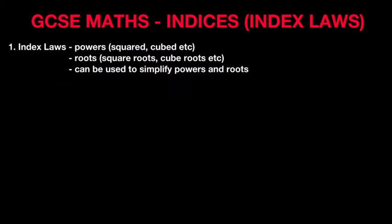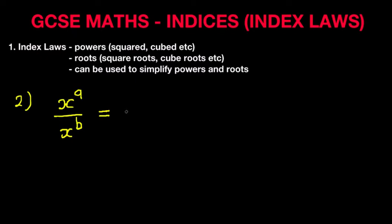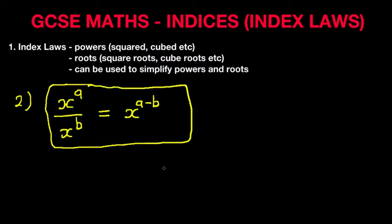We're now going to move to our second rule. This time we have x to the power of a divided by x to the power of b. Because it's division, we subtract the exponents: this equals x to the power of a minus b. Again, this is another golden rule of Index Laws.